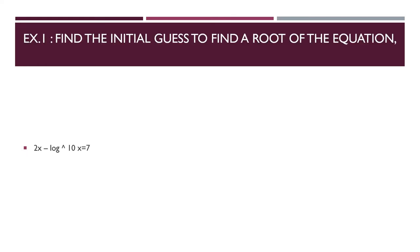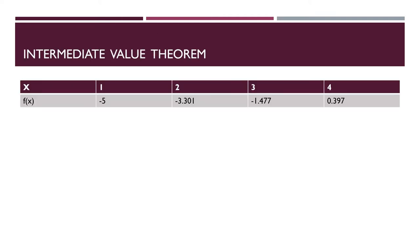Here is one example. Find the initial guess to find the root of the equation 2x minus log base 10 of x equals 7. We can solve this by intermediate value theorem. Let fx equal 2x minus log 10x minus 7.